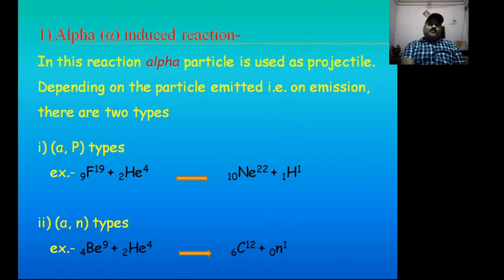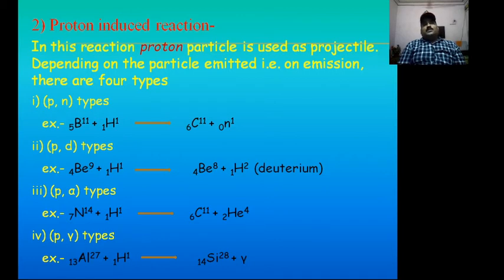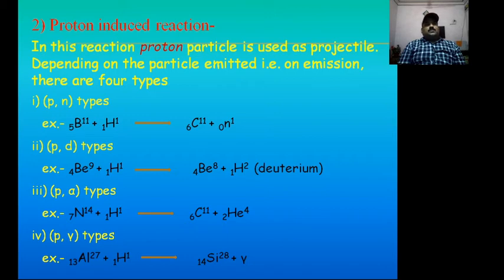The second type of artificial reaction based on the type of projectile is proton-induced reaction. In this reaction, proton is used as a projectile. Again, depending upon the emission, there are four types of proton-induced reactions.